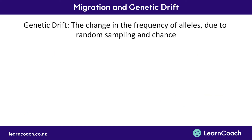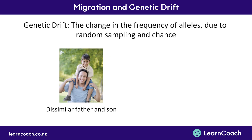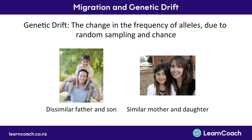Now let's look at genetic drift. Genetic drift is all about random chance and random sampling. For example, randomly you might have a father and son that look dissimilar, or a mother and daughter that do look the same. Two sisters might look completely different or completely the same. This is due to random sampling and chance, and that is what genetic drift talks about — the change in alleles and how often these alleles come up, due to random sampling and chance.